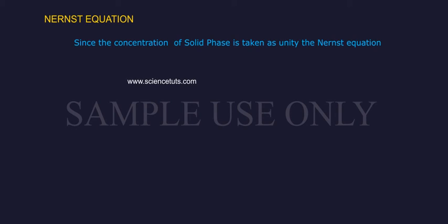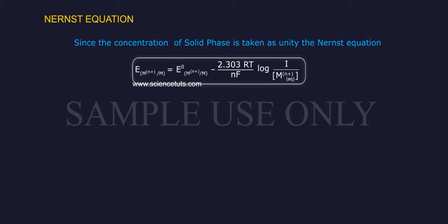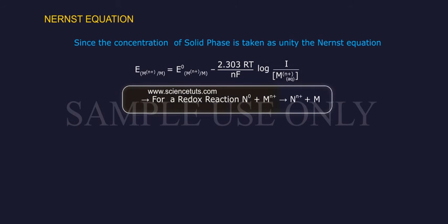Since the concentration of solid phase is taken as unity, the Nernst Equation becomes: Electrode Potential = Standard Electrode Potential - 2.303RT/(nF) log(1/[concentration of ions]).